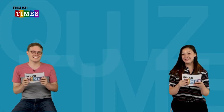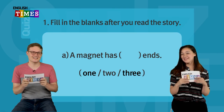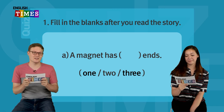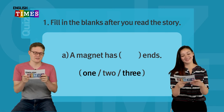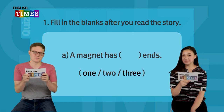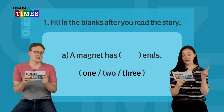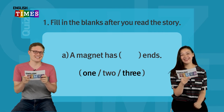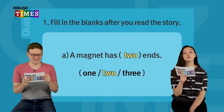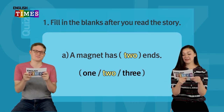Now it's quiz time! Let's think about what we learned and solve together. Number one — fill in the blanks after you read the story. A: A magnet has blank ends. Is it one end, two ends, or three? The answer is two ends. Right — positive and negative. A magnet has two ends.